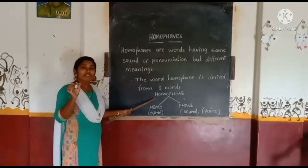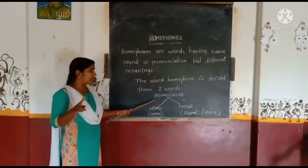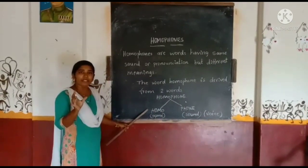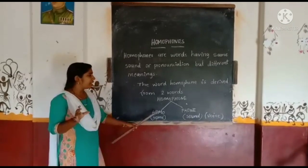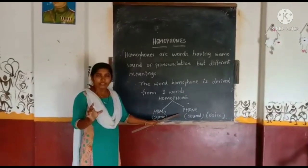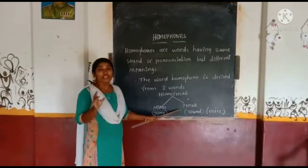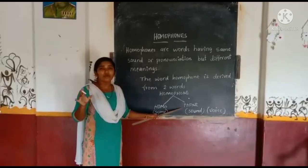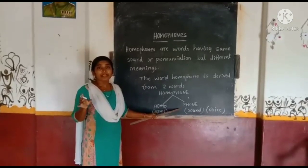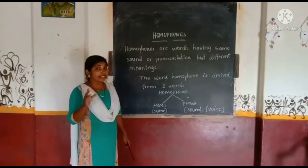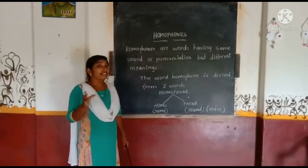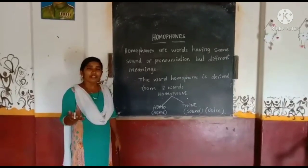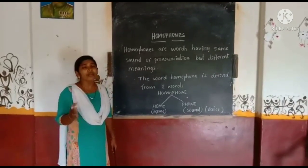The word homophone is derived from two words. Homo means same. Phone means voice or sound — same pronunciation. The words sound the same, spelling is different, and of course meaning is also different. They are called homophones.